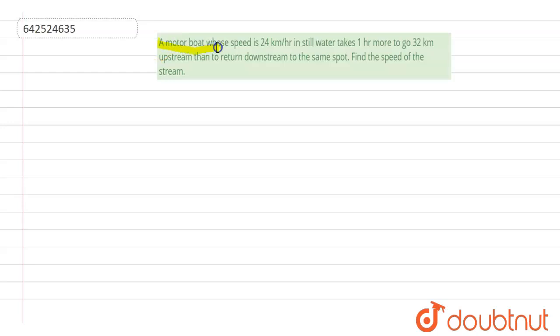A motor boat whose speed is 24 kilometers per hour in still water takes one hour more to go 32 kilometers upstream than to return downstream to the same spot. Find the speed of the stream.